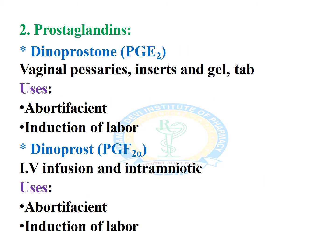The second type of drugs under uterine stimulants are prostaglandins: dinoprostone and dinoprost, which are prostaglandin E2 and F2 alpha analogs respectively. They are basically used as abortifacients and to induce labor pains. They are available in vaginal pessaries, gels, tablets, IV infusion, and intra-amniotic preparations.